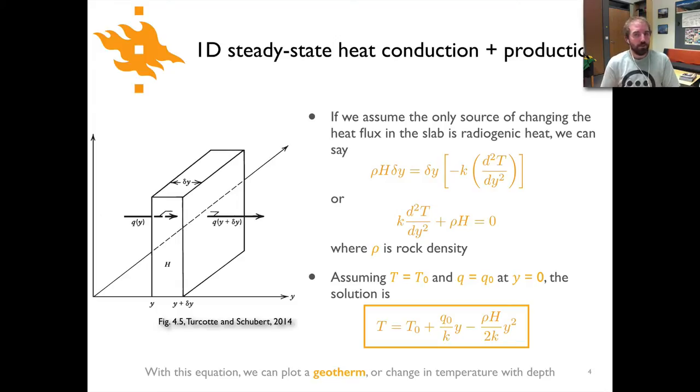Now if we assume the only source of changing the heat flux in the slab is radiogenic heat production, we can say that rho H times delta y, that would be the heat production, is equal to the change in the heat flux throughout the slab. From that we can rearrange things. The delta y's on both sides cancel out. So we get k times the second derivative of temperature with respect to y plus rho times H equals zero, where rho is rock density.